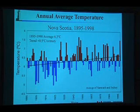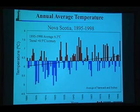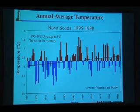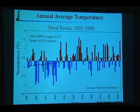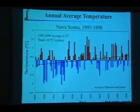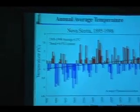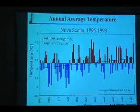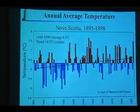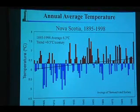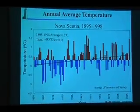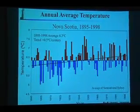The climate has always been changing. This is a graph of historical weather data — the average temperature going back to 1895, which is about when we started recording reliable temperature records. It's an average of Yarmouth and Sydney, the two ends of the province, giving a reasonable average for the whole province. You can see there is a statistically significant trend of about half a degree increase in temperature over that period. That may not sound like a lot — half a degree over a hundred years — and we've been able to deal with that up to now. It's when we look into the future that we really start to be concerned.